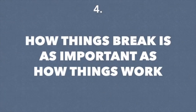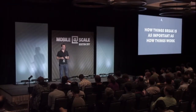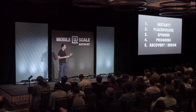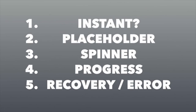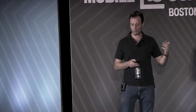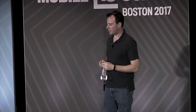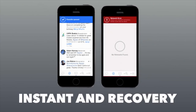The fourth thing is: how things break is as important as how things work. We often think about the happy path — we QA for the happy path. But we need to think just as critically about the error messages and conditions of how things break in a mobile application, especially at scale. Do you have a placeholder if the server is taking more than 100 milliseconds? Do you put up a spinner or a progress bar? What are the error and recovery states? Here's an example from a Twitter client that uses instant and recovery — when you favorite something, they instantly do it and queue the favorite in the background, and if it fails, they give you a retry mechanism.